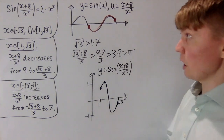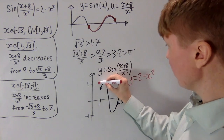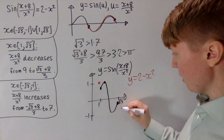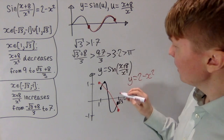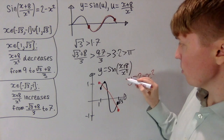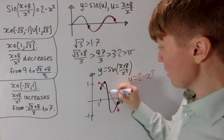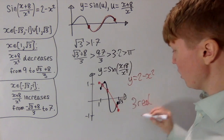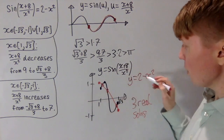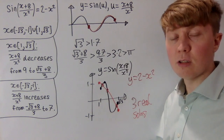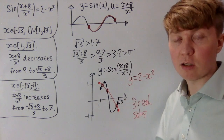Adding y equals 2 minus x squared to the sketch: at x=1 it equals 1, and at x=root 3 it equals minus 1, connected by a gentle curve. The sine curve starts at 1, rises above the quadratic, then falls below it, then finishes above it again — giving exactly three real solutions in this region. We can make this more rigorous with the intermediate value theorem, but pictorially: you go above, then below, then finish above, so there must be three crossings.